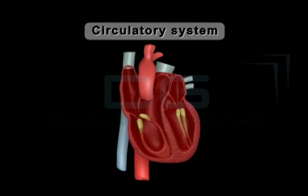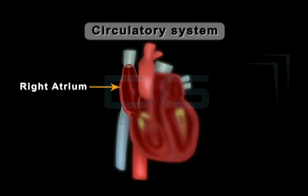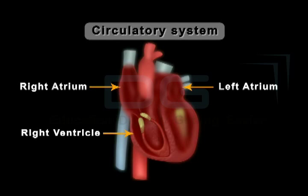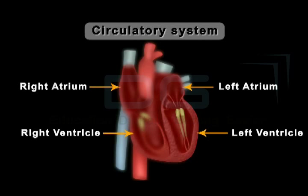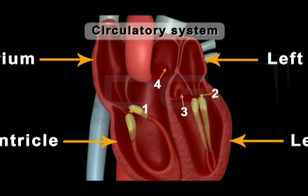The human heart has four chambers known as the right atrium, the left atrium, the right ventricle, and the left ventricle. There are four valves in the heart. All these valves are one-way valves, which allow blood to flow in one direction only.